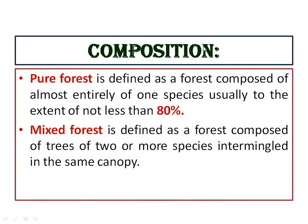On the basis of composition, we have two types: pure forest and mixed forest. Pure forest, as the name suggests, consists of only one species — defined as a forest composed almost entirely of one species, usually to an extent of not less than 80%. Mixed forest is defined as a forest composed of trees of two or more species intermingled in the same canopy.